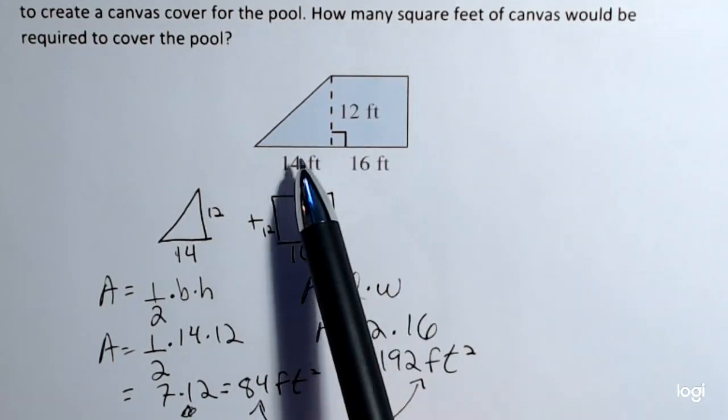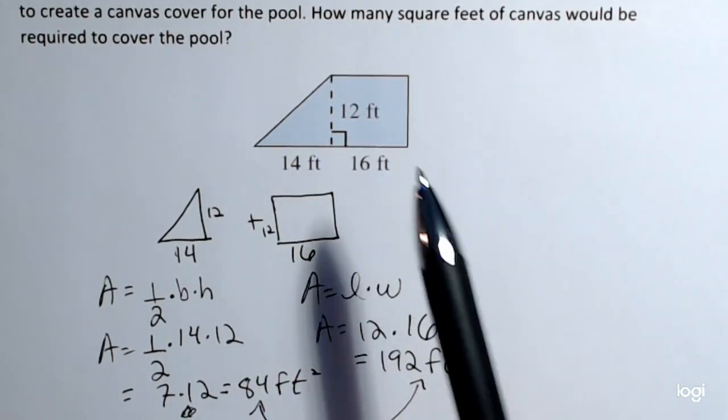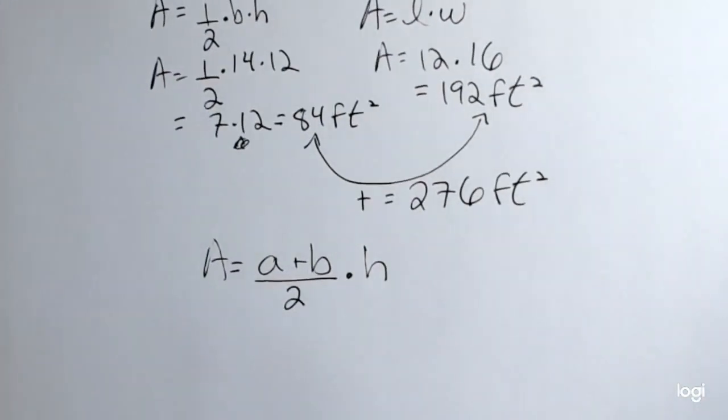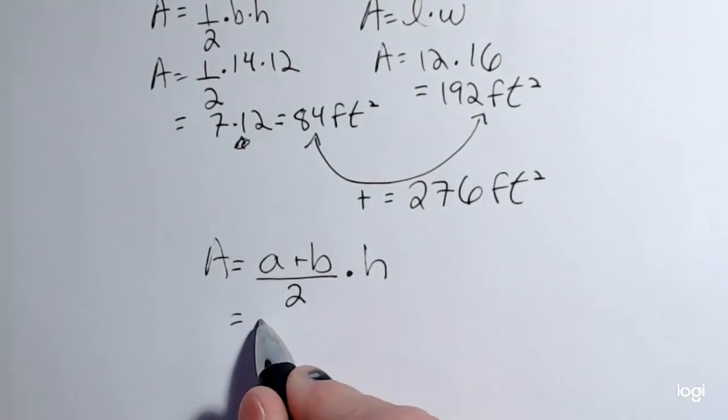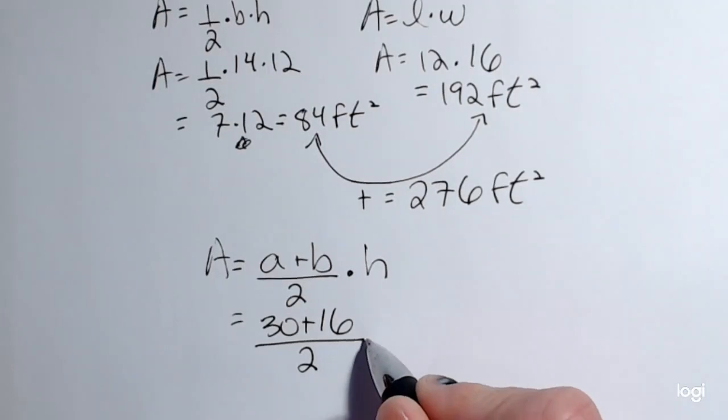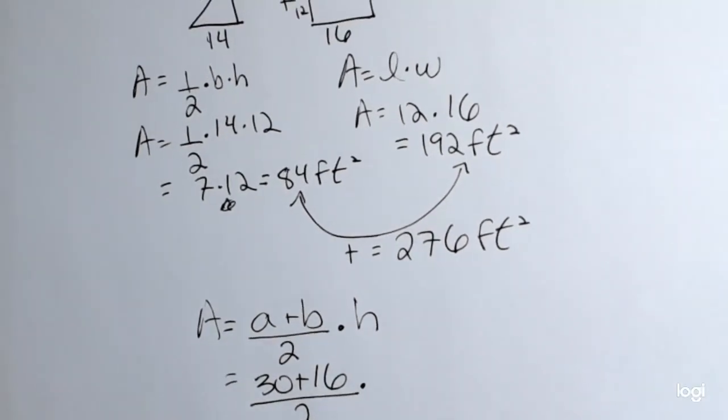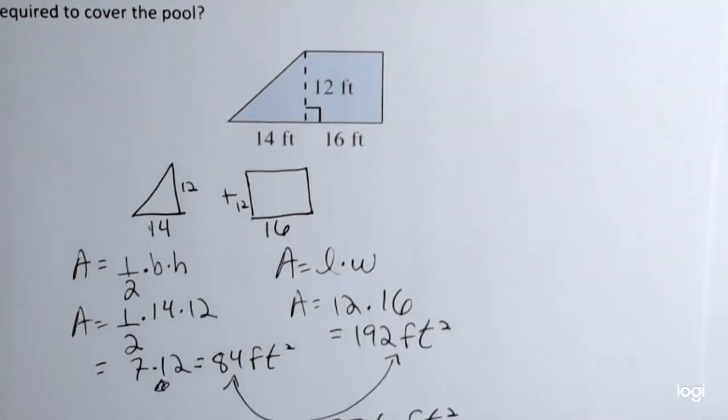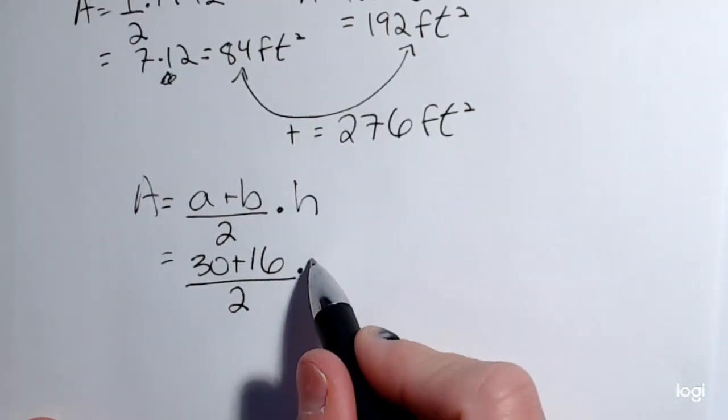So one base is 16 feet, and the other base is 30 feet. So plugging those in, that's 30 plus 16. We're going to divide that sum by two, and then multiply by the height. The height, looking at the figure, is 12 feet. So I want to multiply that by 12.